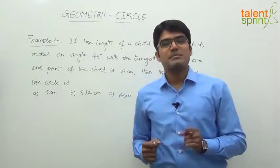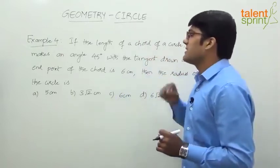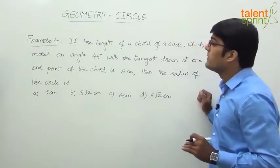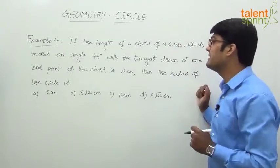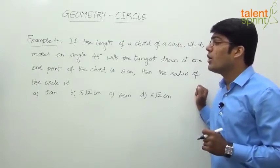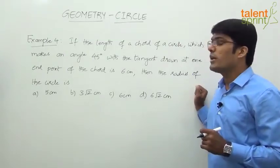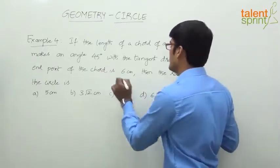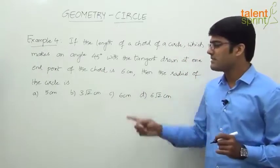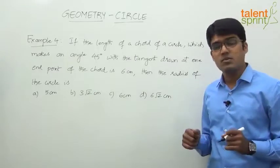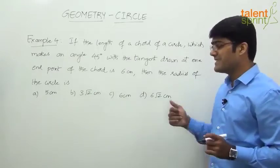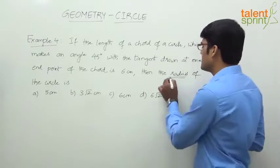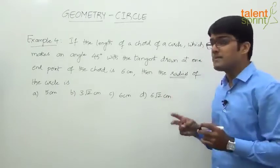Let us now look at the fourth example. The question says: if the length of a chord of a circle which makes an angle of 45 degrees with a tangent drawn at one end point of the chord is 6 centimeters, then the radius of the circle is — options are 5 cm, 3√2 cm, 6 cm, or 6√2 cm.